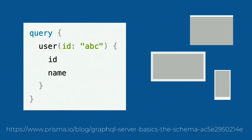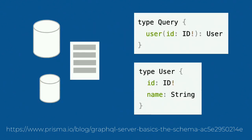We've seen what the query can look like. This is another example taken from a very good article about the basics of a GraphQL server. On the frontend/client side, you would have a user field with an ID to specify which user, and then from that you want the ID and the name. How would that look on the server side? When you define a GraphQL server, there are two main aspects: the structure and the behavior.